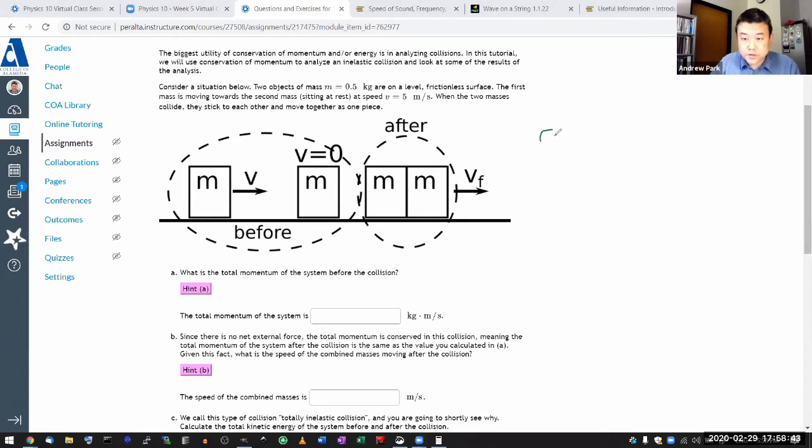And what conservation of momentum means is, well, when you have the total momentum, you add up all the momentum of everything in your system, or that summation symbol might not be familiar to everyone. So let me just write that.